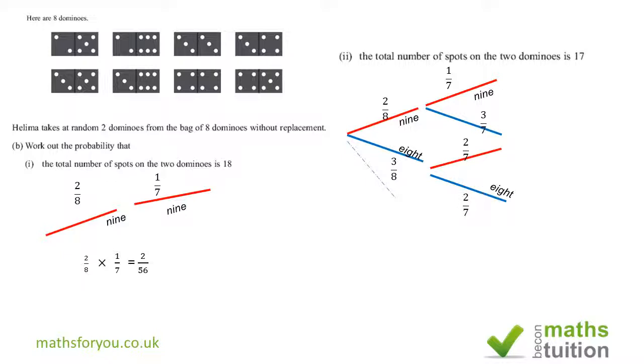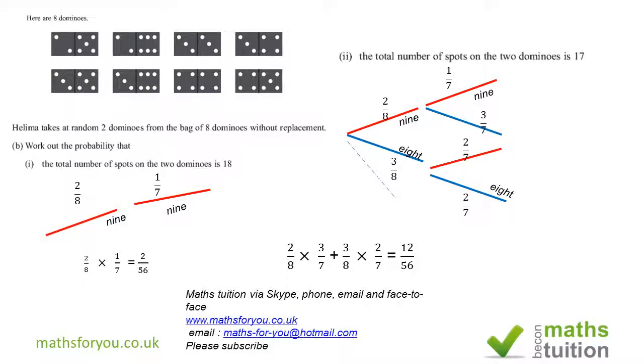Therefore, to get 17 we can either pick 9, 2 over 8, and an 8, 3 over 7, or an 8, 3 over 8, and a 9, 2 over 7 there. So our answer is then 2 over 8 times 3 over 7 plus 3 over 8 times 2 over 7, and we get 12 over 56. Again this can be reduced.